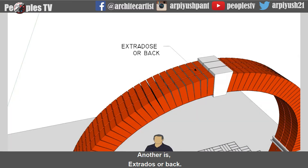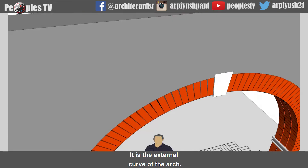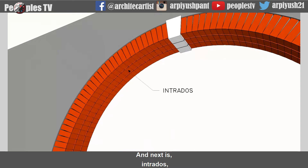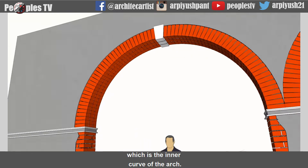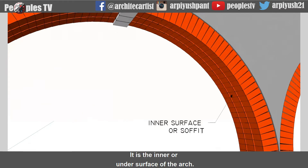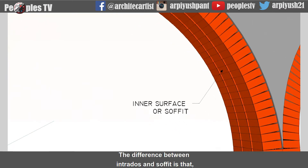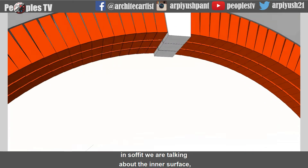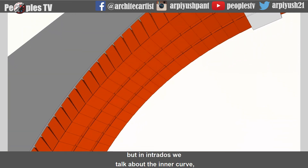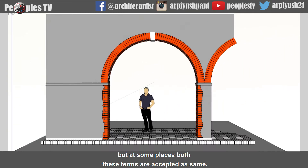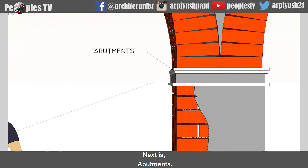Another term is extrados, or back — it is the external curve of the arch. Next is intrados, which is the inner curve of the arch. Another term is soffit — it is the inner or under surface of the arch. The difference between intrados and soffit is that soffit refers to the inner surface, while intrados refers to the inner curve, though at some places both terms are accepted as the same.